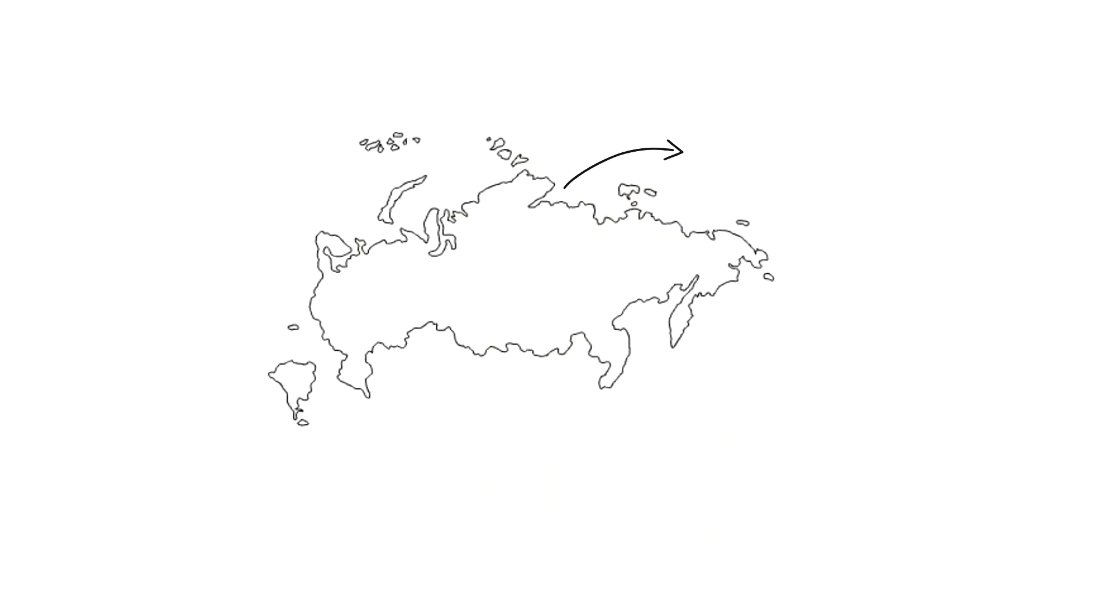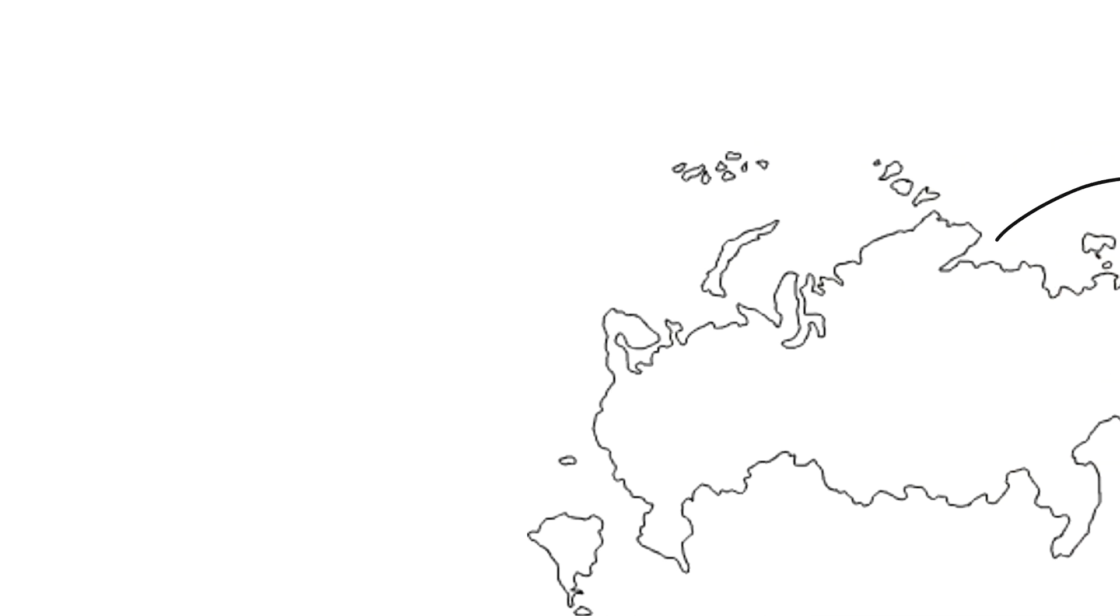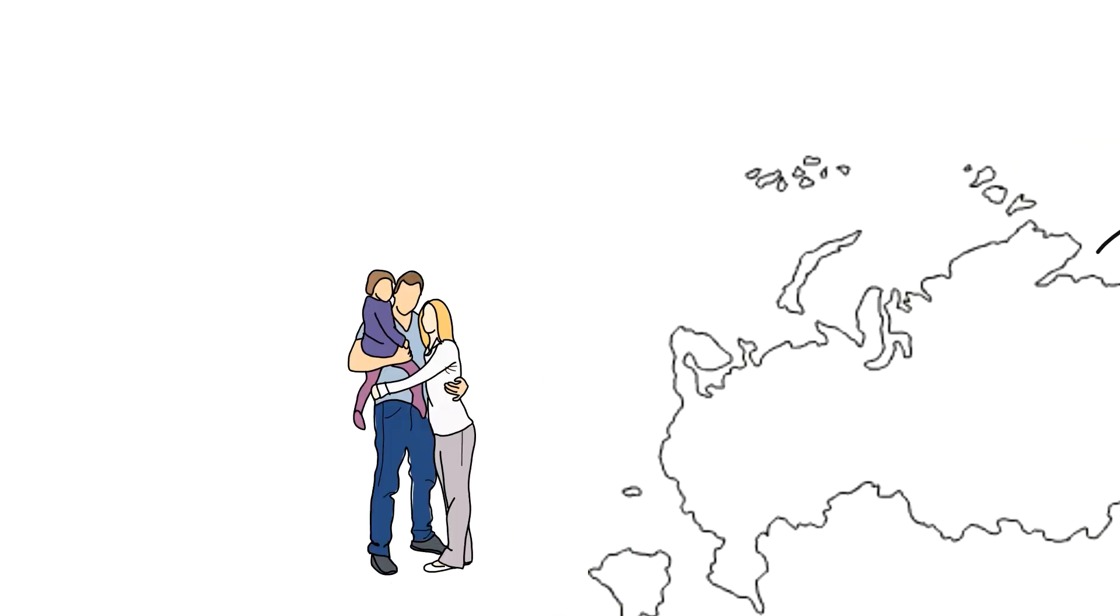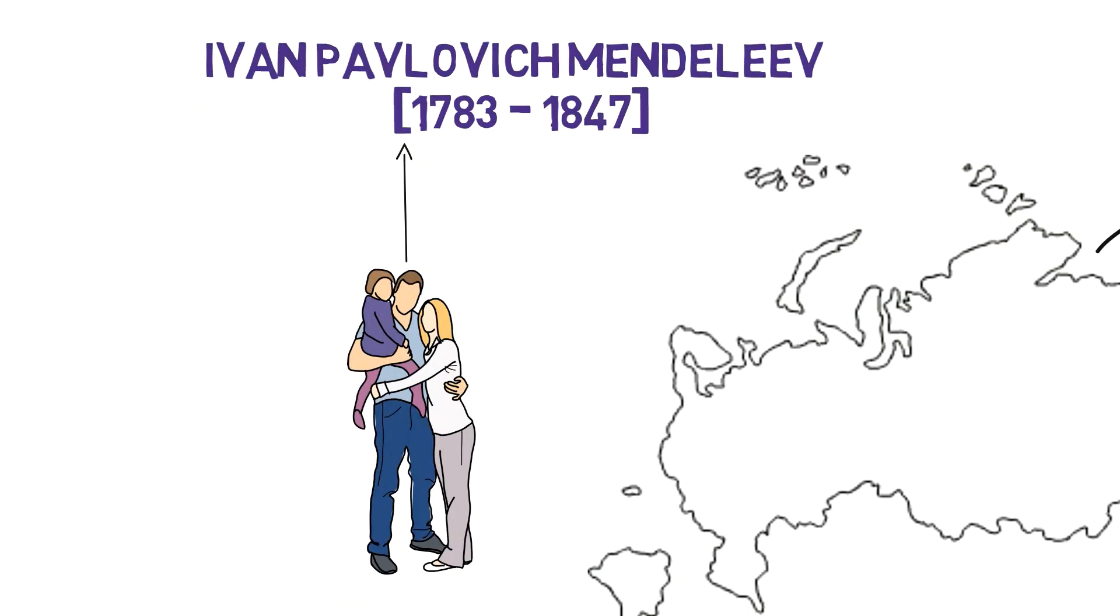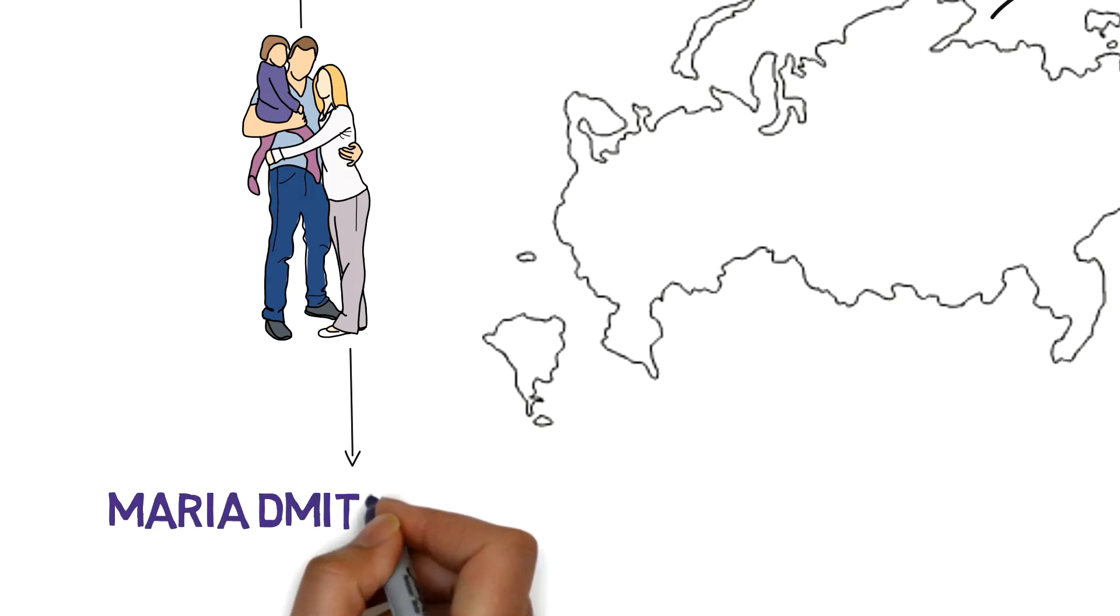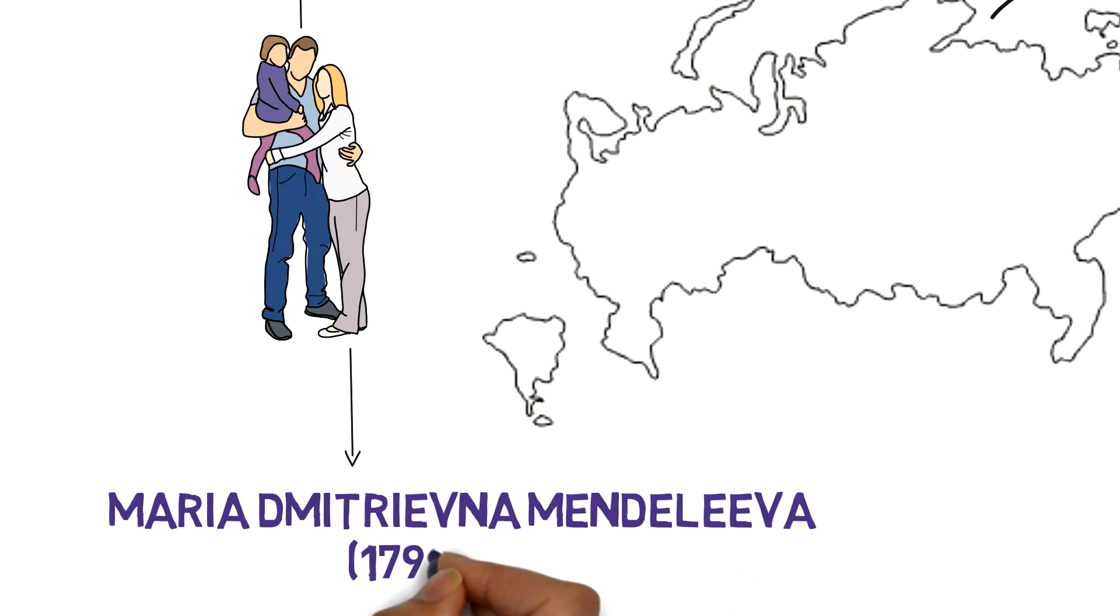Mendeleev was born in the village of Vrkny Aramziani near Tobolsk in Siberia, to Ivan Pavlovich Mendeleev and Maria Dmitryevna Mendeleev.